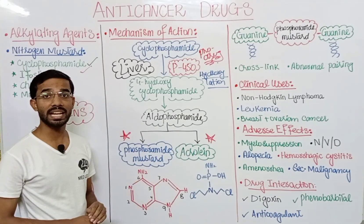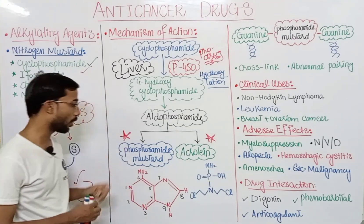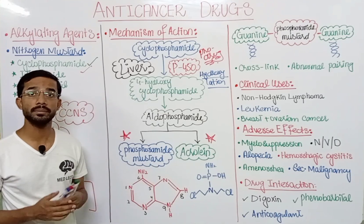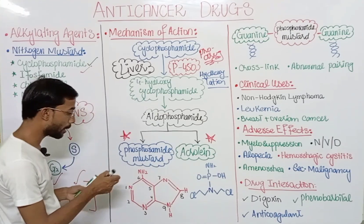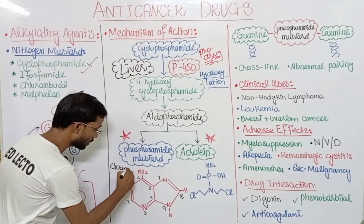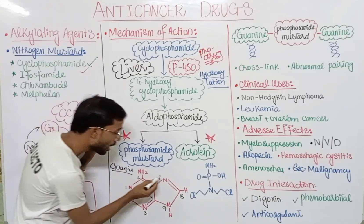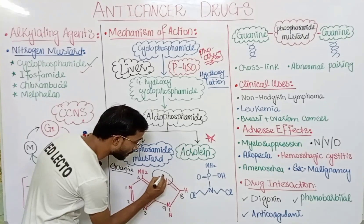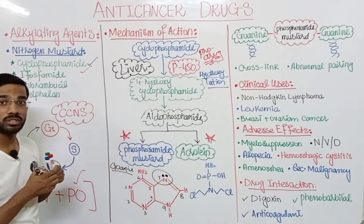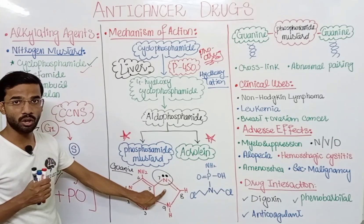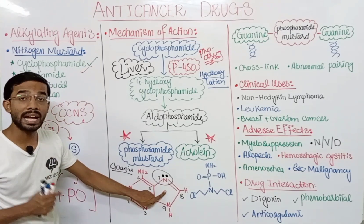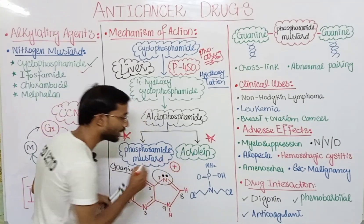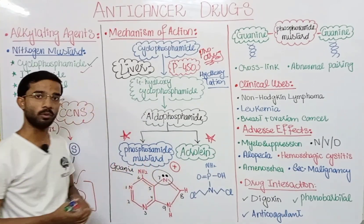Phosphoramide mustard acts as the alkylating agent. As we know, DNA has different bases: adenine, guanine, and cytosine, and the most important component here is guanine. At position 7 of guanine you see the presence of a nitrogen atom that has a lone pair of electrons. This nitrogen of guanine is nucleophilic — it loves atoms with a positive charge because the negatively charged electrons attract the positively charged nucleus.